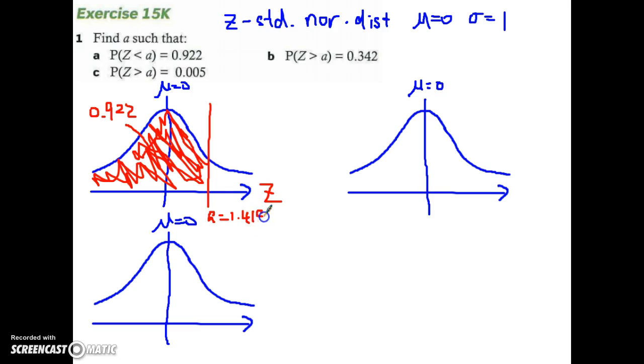So my A over here is about 1.419. What that means is, this A is 1.419 standard deviation above the mean. Okay? So it is pretty, pretty high. Right? It is almost 1.5 standard deviation above. Okay? Alright. So that's part A.